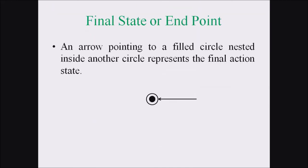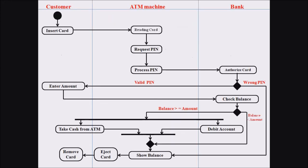Now we move to the final state. A final state is represented by an arrow pointing to a filled circle nested inside another circle. After removing the card, the customer can leave the ATM counter, and this is how we represent the final state of the ATM transaction activity diagram.